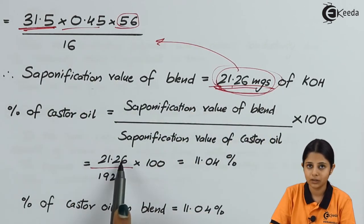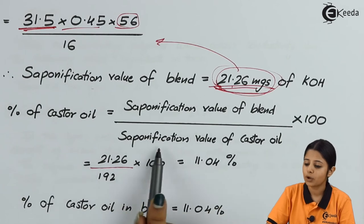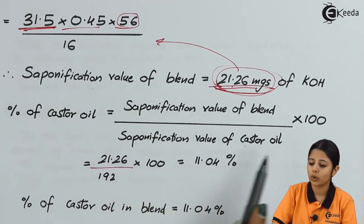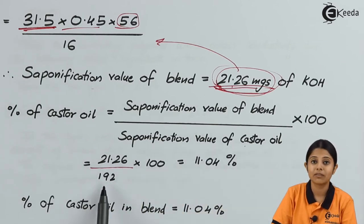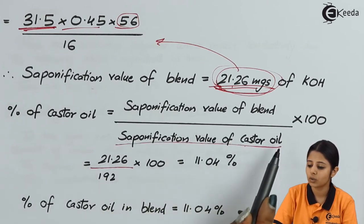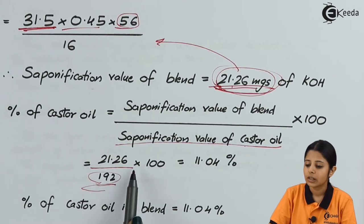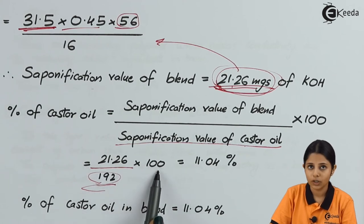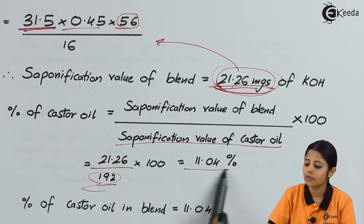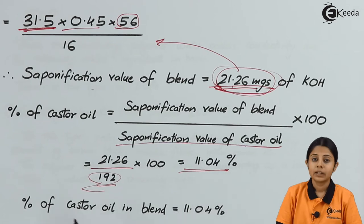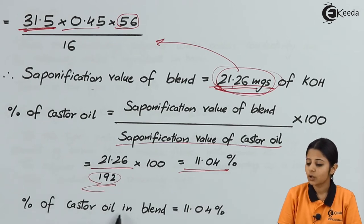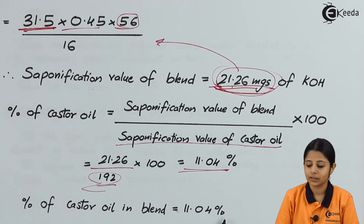Therefore percentage of castor oil = (saponification value of blend / saponification value of castor oil) × 100. Saponification value of blend is 21.26 (calculated from 31.5 × 0.45 × 56 / 16), and saponification value of castor oil is 192, which is already given in the question. Thus percentage of castor oil = (21.26 / 192) × 100 = 11.04%. This is the final answer.